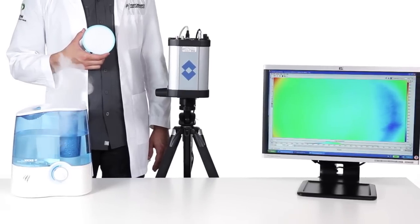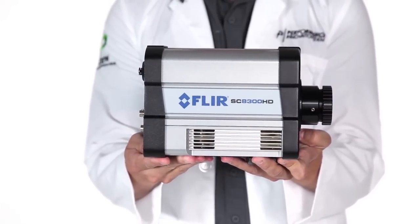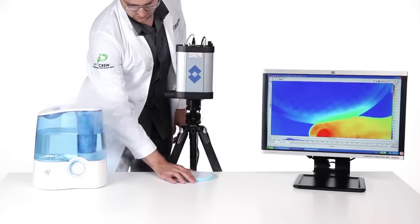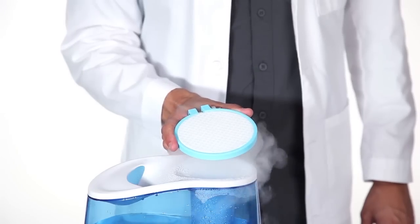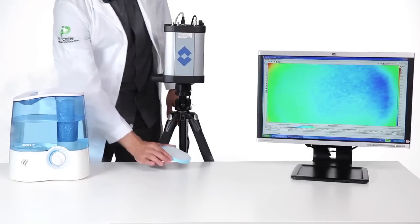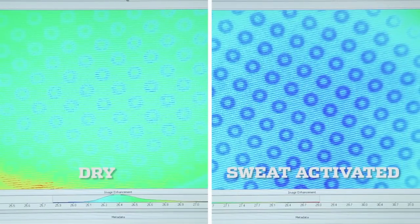The sweat-activated cooling of OmniFreeze Zero is demonstrated with this high-definition thermal imaging camera. First, here is the fabric before we apply moisture. Now, we add water in the form of steam. The moisture causes a reaction in the blue rings. They now show as dark blue on the thermal camera, indicating a drop in temperature.